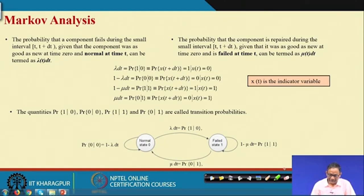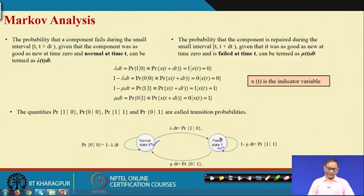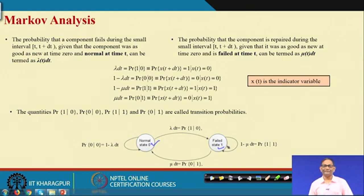We will consider the diagram you have already seen. We are thinking that the component has 2 states: one is normal, another one is failed. If the component is working, that means it is in the normal state — it can remain in that state, or a transition to the failed state may take place. The transition from normal to failed state will happen based on certain transition probability values.